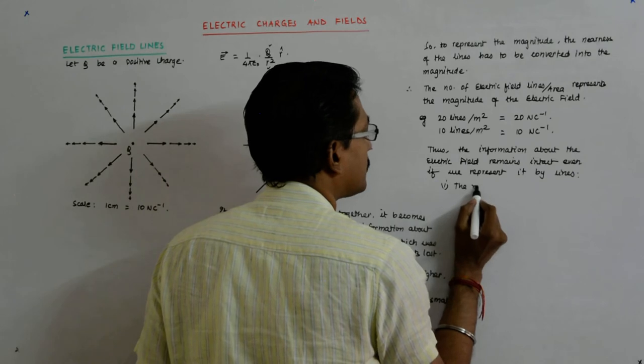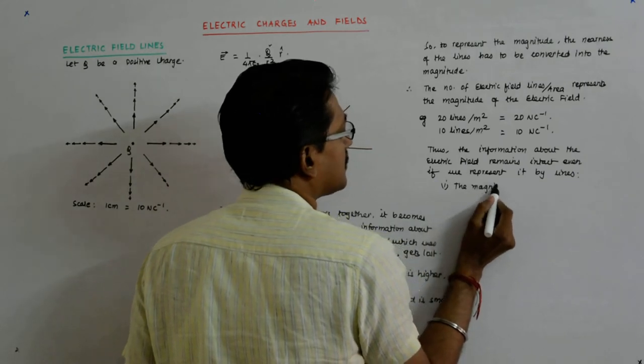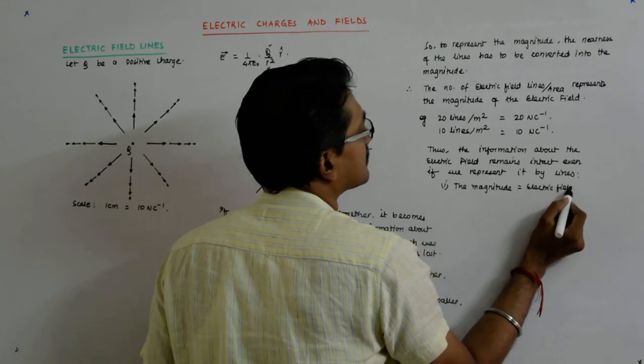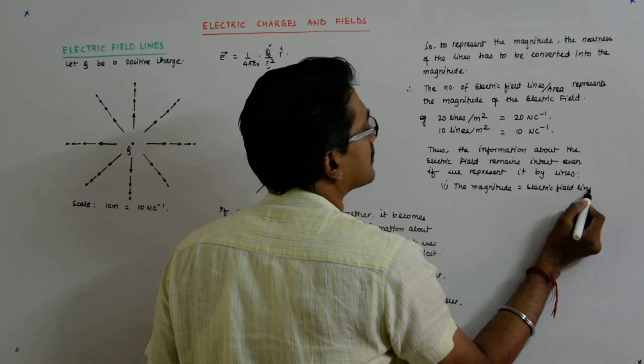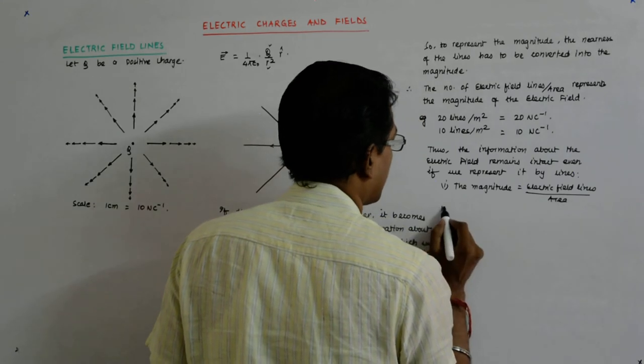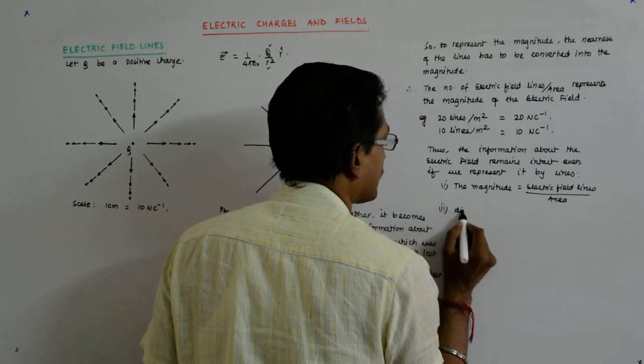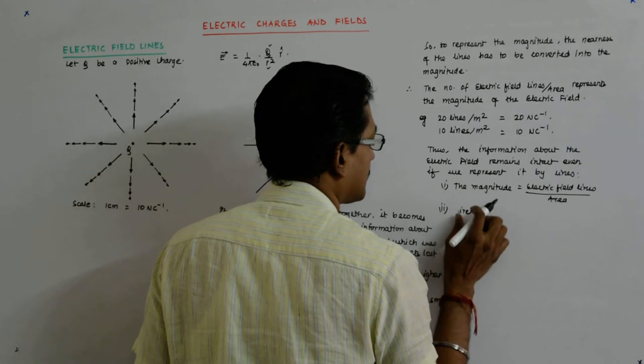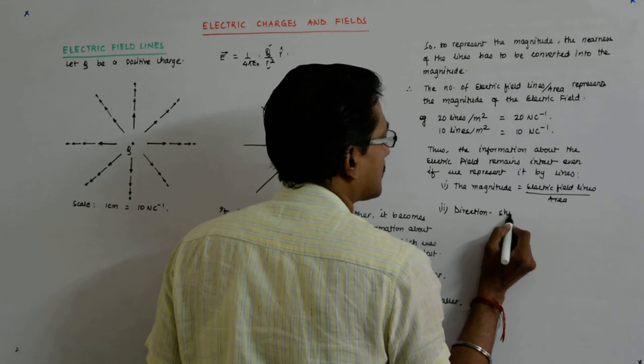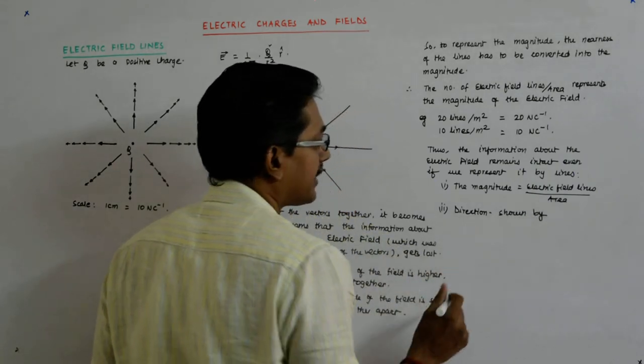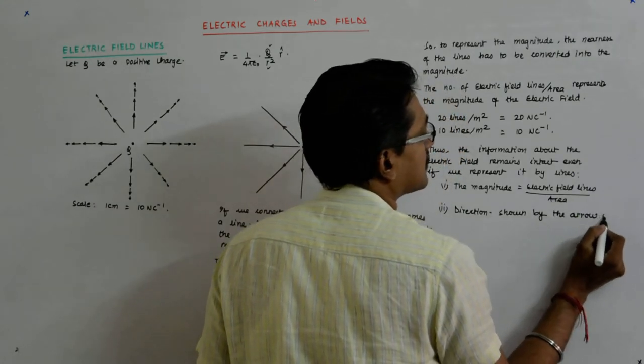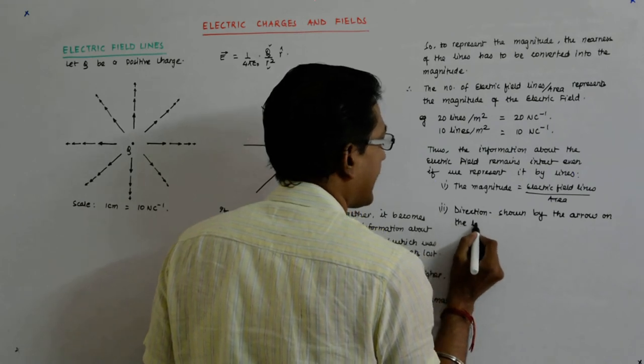The magnitude is equal to electric field lines per unit area and direction is shown by the arrow on the line.